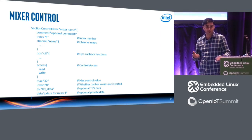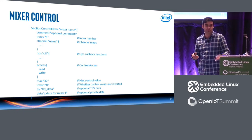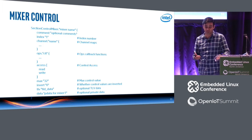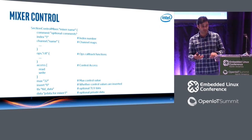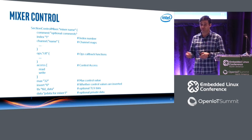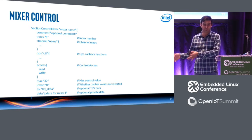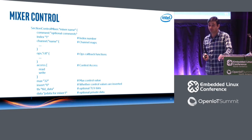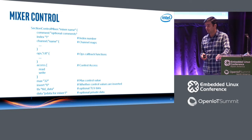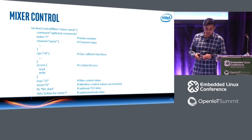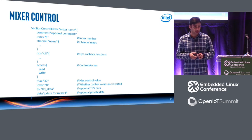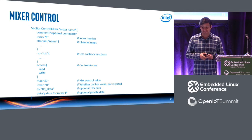The control always has an access field specifying how user mode can access it — read only, write only, read-write, TLV access, or TLV read access. You can also specify the maximum values the control can take, whether it's an inverted control, what the TLV data is, and for DSPs, the private data. For byte controls, you declare them using 'SectionControlBytes' with a name. For a DSP or codec, you would have a register associated, and you can define register base, number of registers, mask values, and maximum values. For enumerated controls, first define a text section for the enum values, then declare 'SectionControlEnum' referencing that text section.